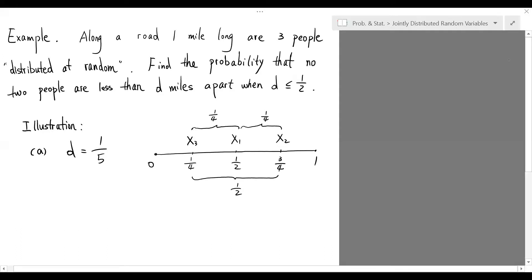If we utilize these order statistics, then capital X sub 1 is 1 fourth, capital X sub 2 is 1 half, and capital X sub 3 is 3 over 4.